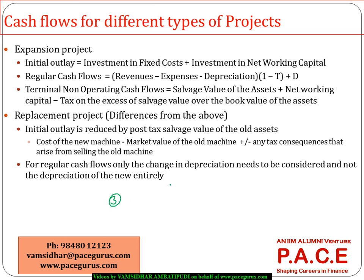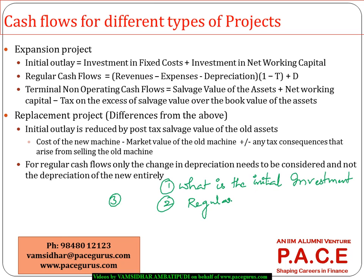The first is the initial outlay — how much did we really invest, what is the initial investment in the project. The second is the regular cash flows — annual or whatever period we are looking at — from operations. The third is the terminal non-operating cash flow.